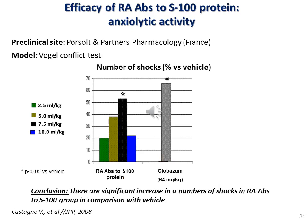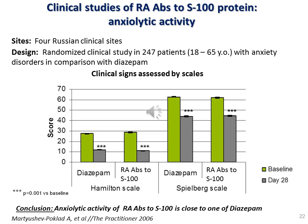During the study of the effect of release active antibodies to S100 protein, the Vogel conflict test was used. The principle of the test is a conflict between thirst and fear of electric shock; the number of attempts to drink is a sign of the anxiety level. Activity of release active antibodies to S100 protein was on the same level as the reference drug. A randomized clinical study of this drug in comparison with diazepam also showed the effect of release active antibodies on both anxiety scales.